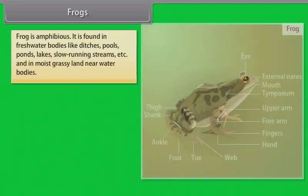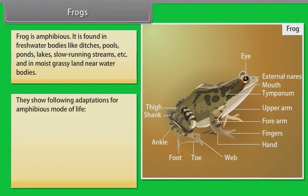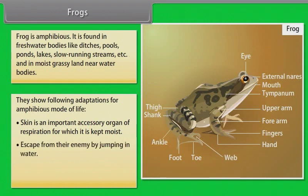Frog is amphibious. It is found in freshwater bodies like ditches, pools, ponds, lakes, and slow-running streams, and in moist grassy land near water bodies. Frogs show the following adaptations for an amphibious mode of life: the skin is an important accessory organ of respiration and is kept moist; they escape from enemies by jumping into water; and fertilization and development take place in water.